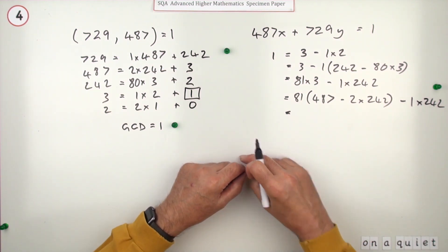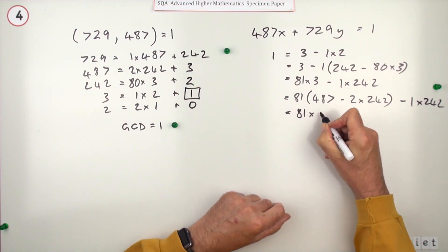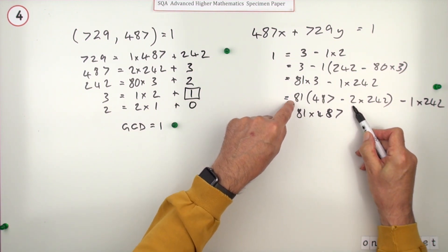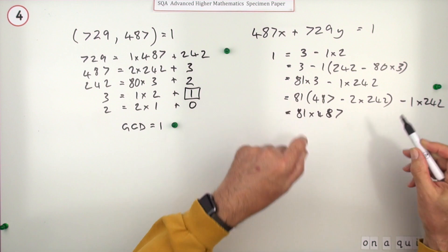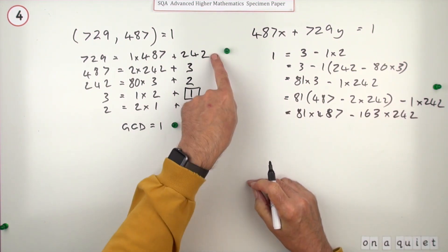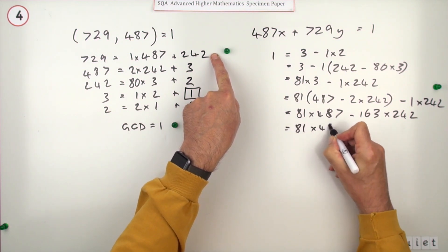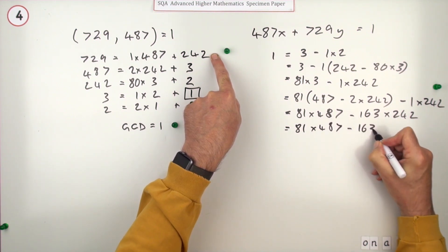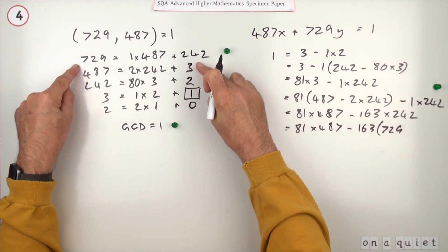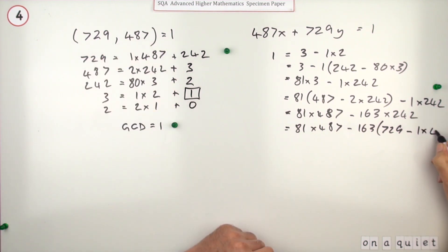Now you gather up the 242s and 487s. There's 81 lots of 487 - that's going to be minus 162, minus 163 lots of the 242. Up at the top I can replace that 242, so I've got 81 lots of 487 and 163 lots of 729 - 1×487.